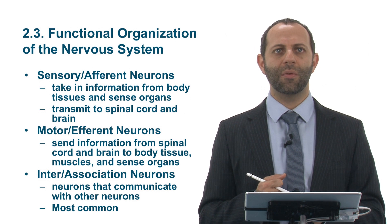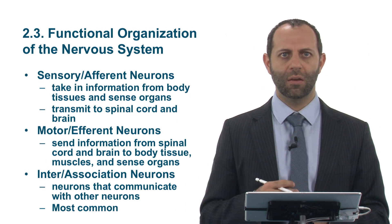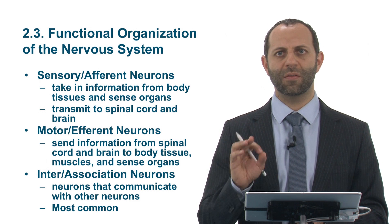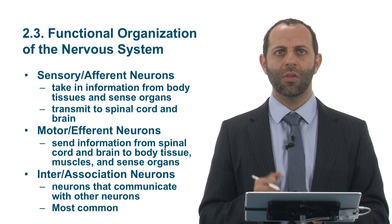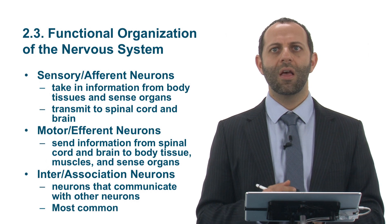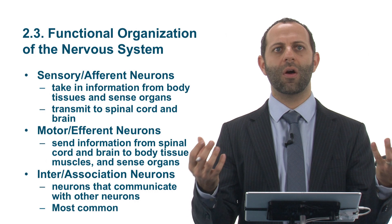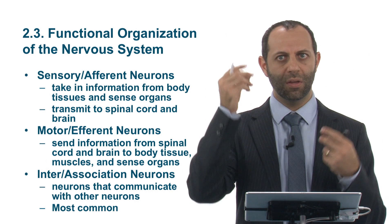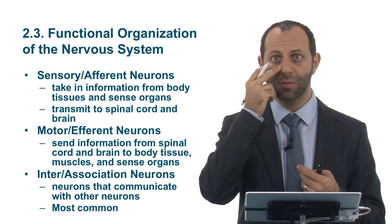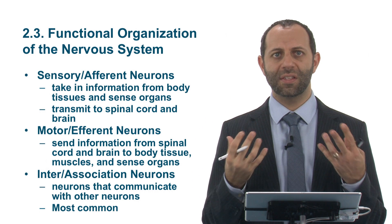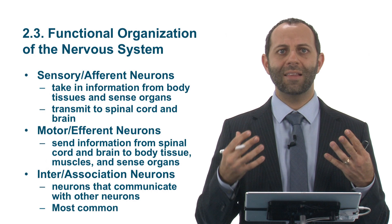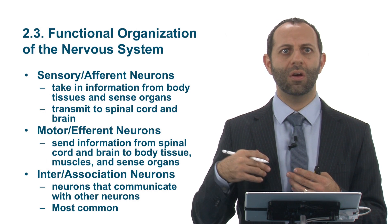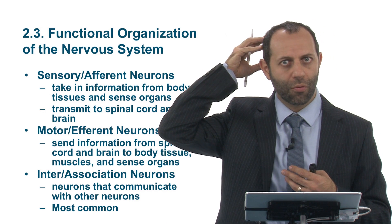Now let's talk about some of the functions within the nervous system. We have three specific types of neurons. The first are the sensory or afferent neurons. These neurons take information from the body tissues and all areas of the body — whether touch, sight, sound, smell, or taste — and send that along neural pathways up the spinal cord into the brain.